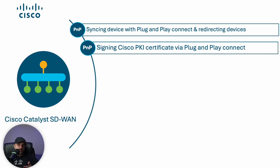In addition, signing device and control component certificates via Cisco's PKI root certificate is also automated by leveraging smart account and virtual account credentials in the controller certificate authorization under the SD-WAN Manager settings page.